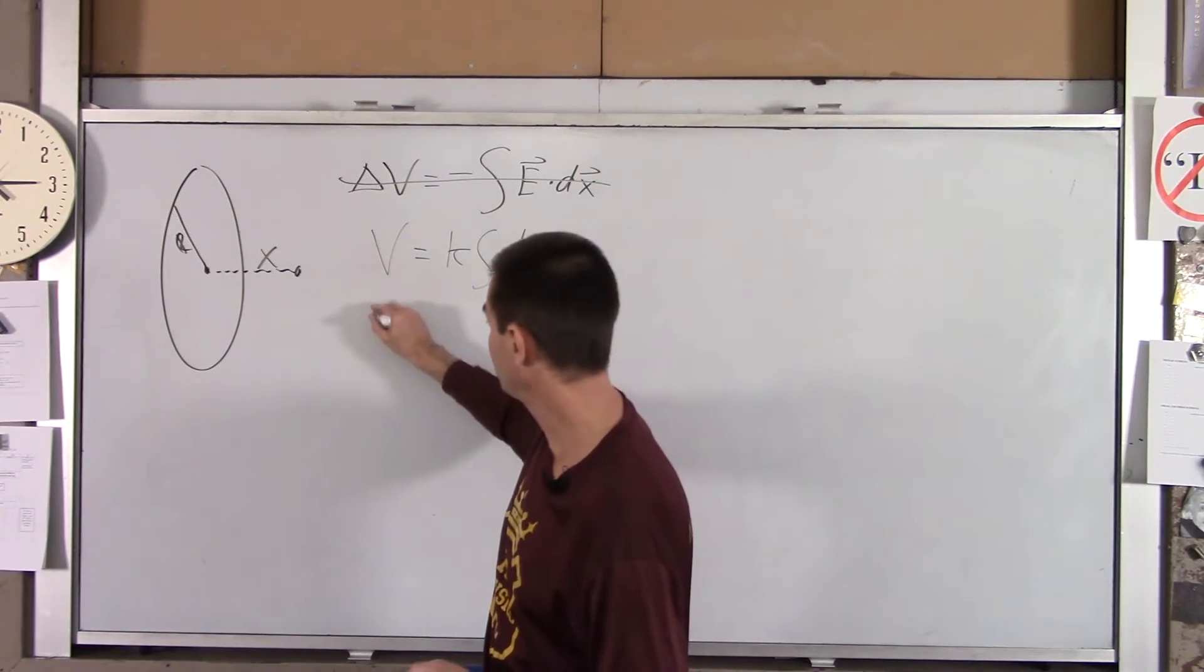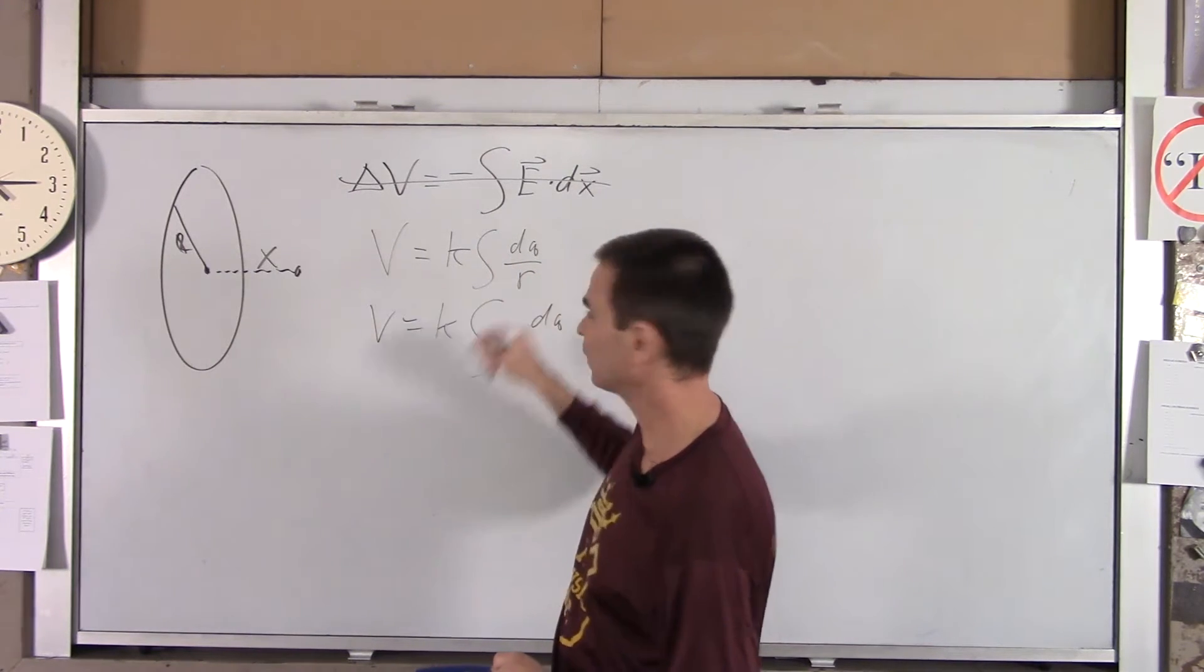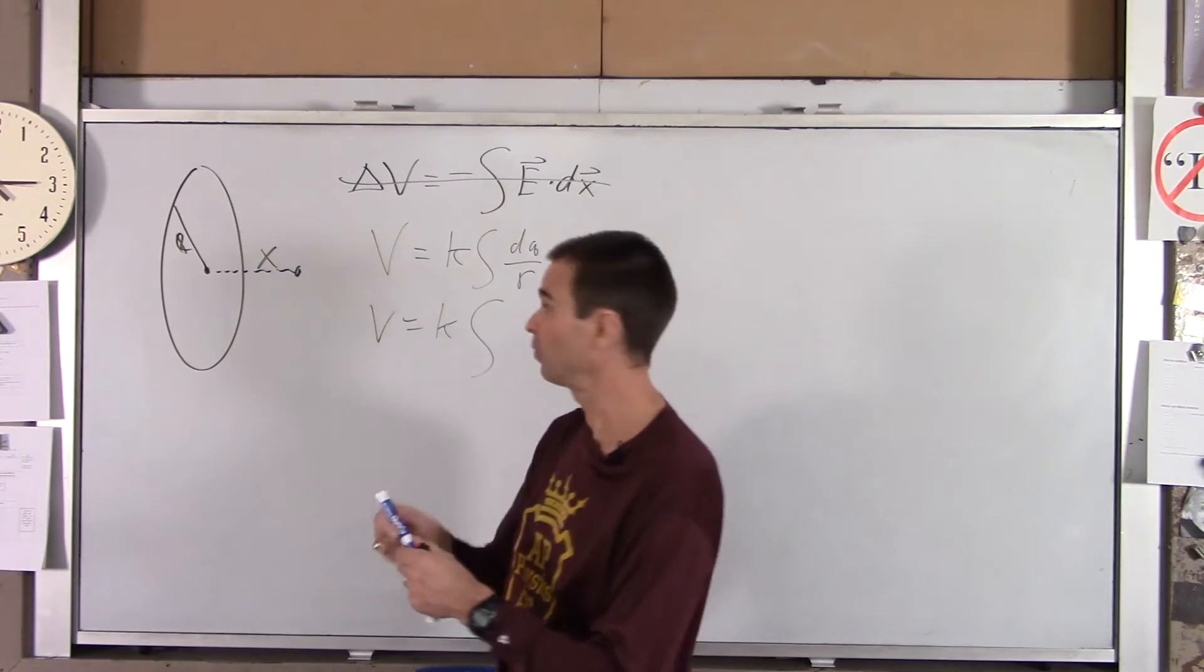Okay, so voltage is K, the integral of DQ. Well, what's R? In other words, exactly how far is the charge from our point in space?